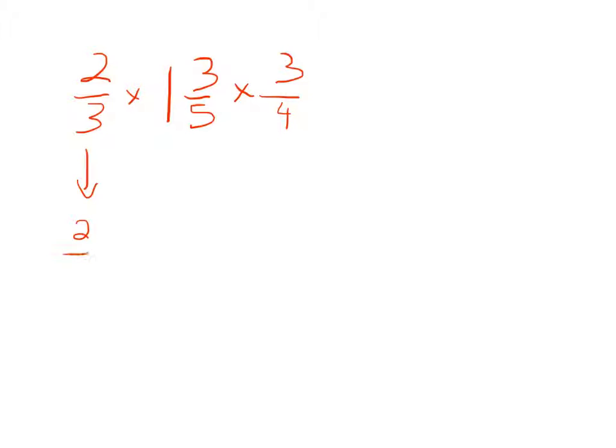So this will remain 2/3. Let's go—five times one is five, plus three is eight. So that will be 8/5. And we can keep this 3/4. There's no division in here, so we don't have to do any reciprocals.